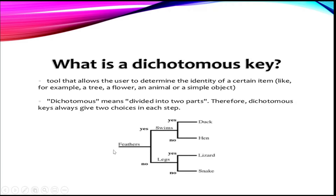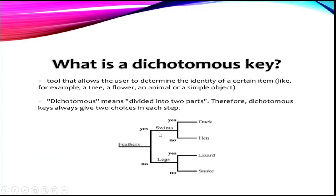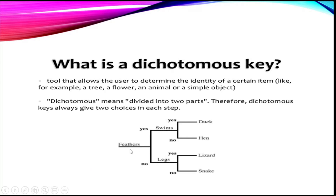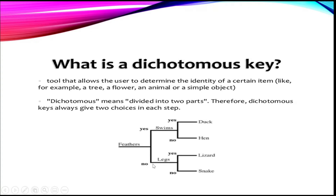For example, we can start by asking whether feathers are present or not. If yes, we go to the second choice: does it swim? If yes, it may be a duck; if no, it may be a hen. If there are no feathers, we ask whether it has legs. If it has scaly soft legs, it's a lizard; if not, it's a snake.